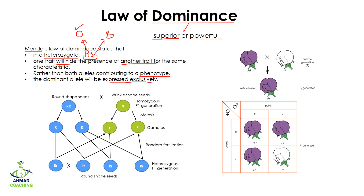Here you can see we have round-shaped seeds and wrinkled-shaped seeds. Wrinkled shapes are shown with small r, meaning they are recessive; capital R capital R means they are dominant. During gamete formation, the alleles will segregate — so one gamete will have capital R and the other gamete will also have capital R; similarly, one gamete will have small r and the other will also have small r.